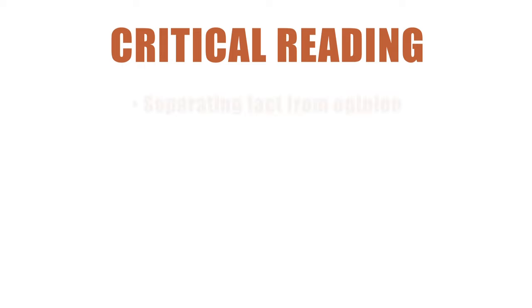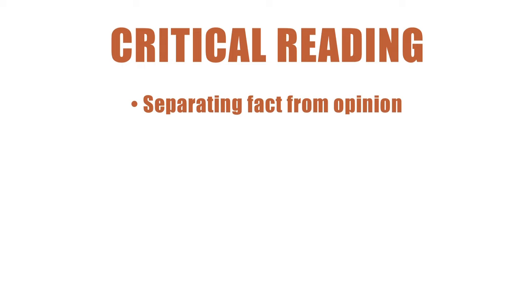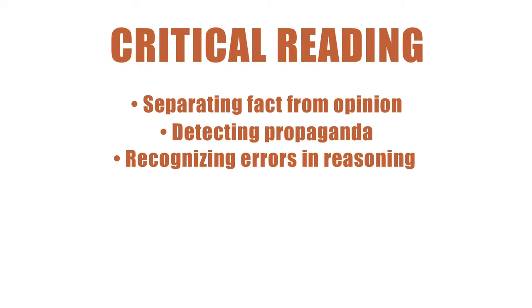Skilled readers are those who can recognize an author's point and the support for that point. Critical readers are those who can evaluate an author's support for a point and determine whether that support is solid or not. This lesson will extend your ability to read critically in three ways: separating fact from opinion, detecting propaganda, and recognizing errors in reasoning.